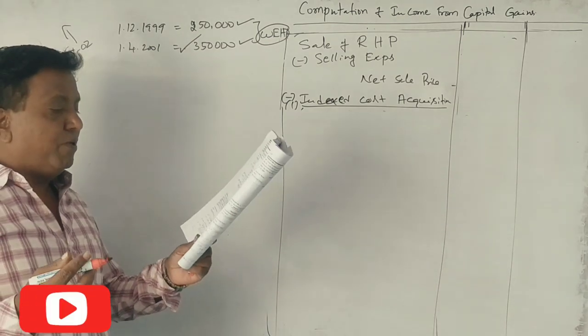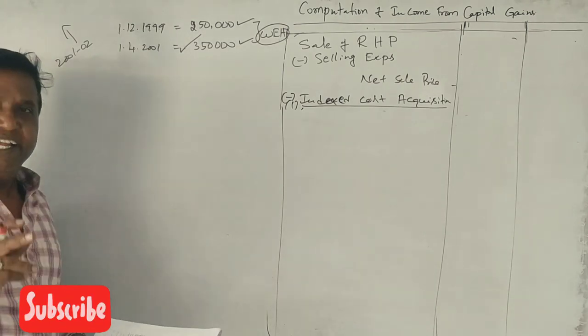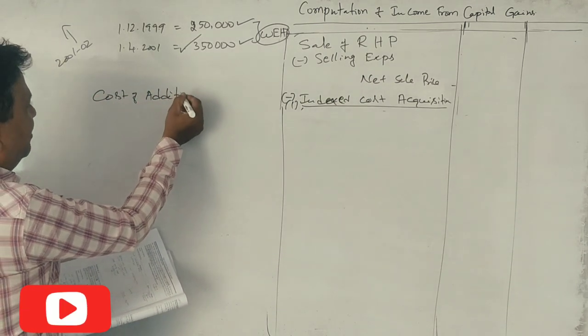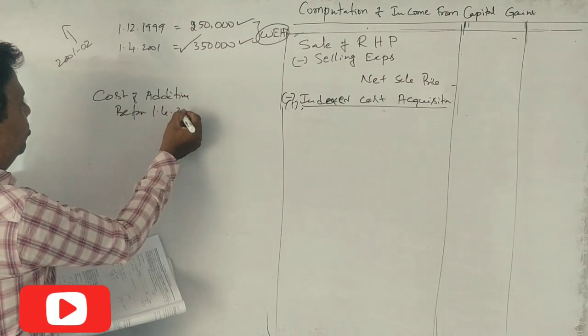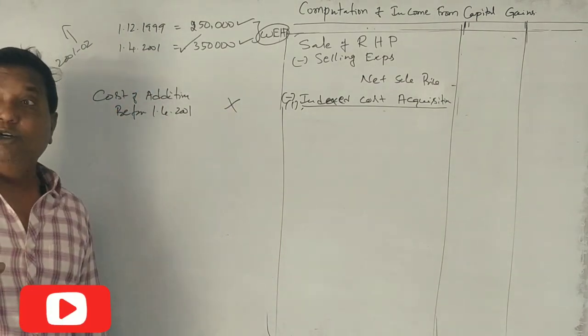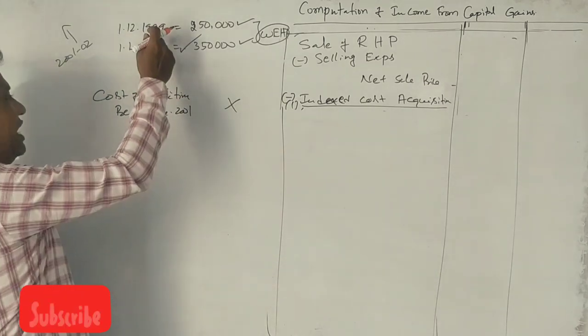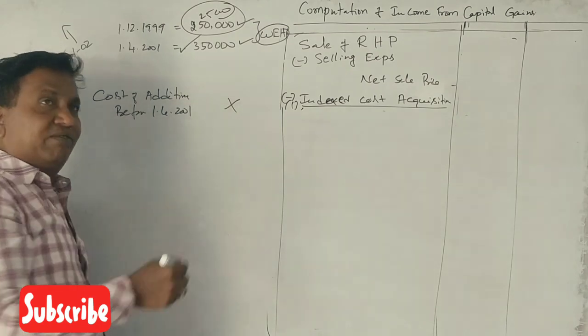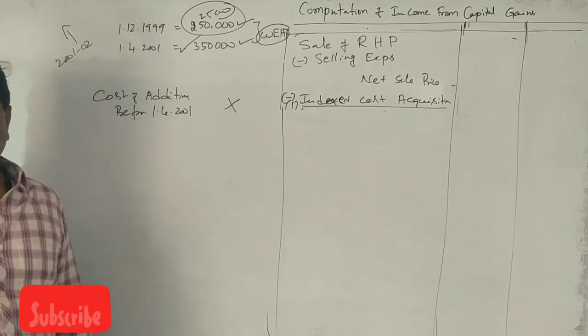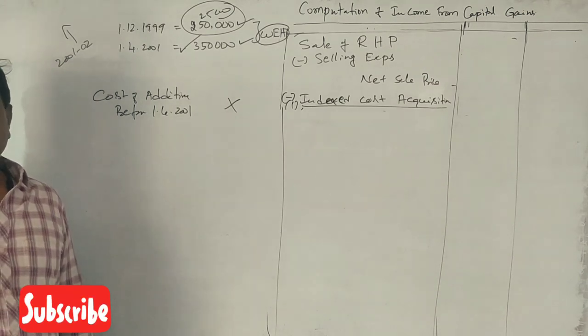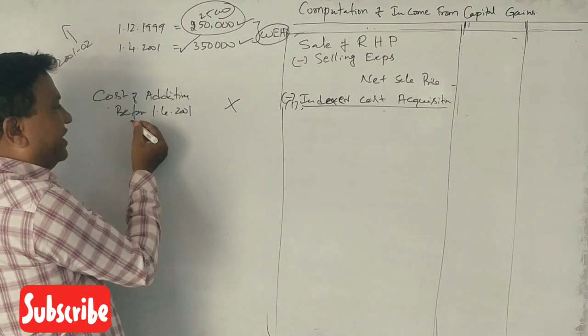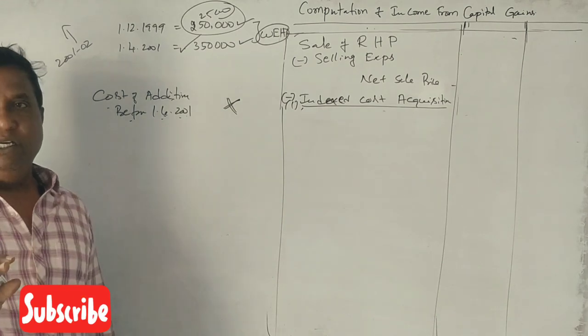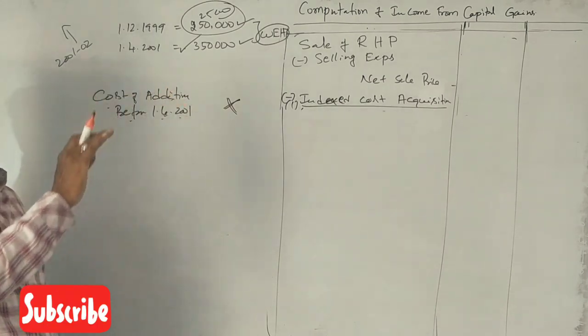Now for cost of addition. Any cost of addition before 1-4-2001 should be ignored.